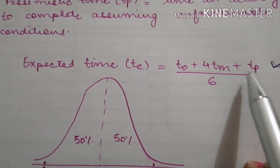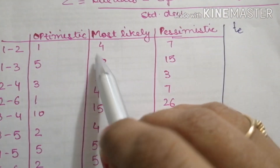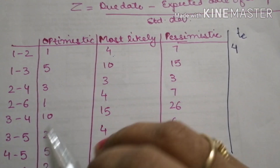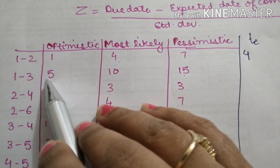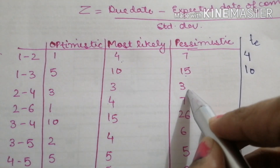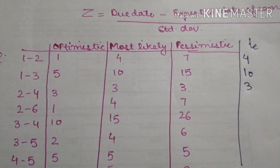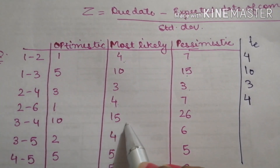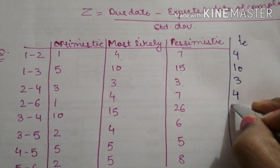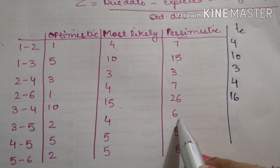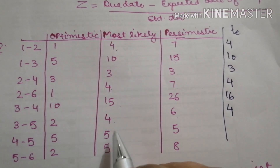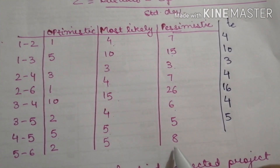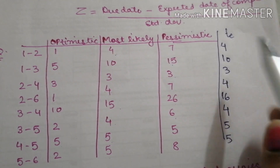Using the formula TO plus 4TM plus TP divided by 6, we calculate expected times for each activity. For activity 1-2: 4 into 4 is 16, plus 7 is 23, plus 1 is 24, divided by 6 equals 4. For 1-3: 4 into 3 is 12, plus 3 is 15, plus 3 is 18, divided by 6 equals 3. For 2-4: 24 divided by 6 equals 4. For 3-4: 15 into 4 is 60, giving 96 divided by 6 equals 16. For 2-6: 24 divided by 6 equals 4. For 3-5: 30 divided by 6 equals 5. For 4-5 and 5-6: 30 divided by 6 equals 5 each. We have now calculated all the expected time periods.